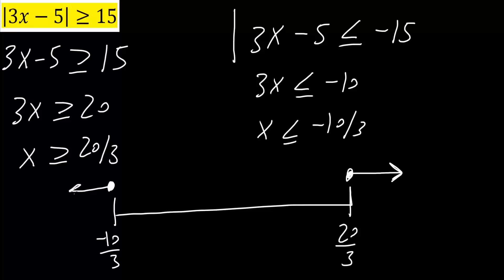So the answer could be anywhere to the right of 20 over 3 or anywhere to the left of negative 10 over 3, but not in between. For example, x could be 100 — plugging in 100, we get 300 minus 5, which is 295, and 295 is greater than 15. And that's all you need to do for these problems.